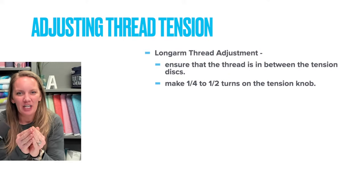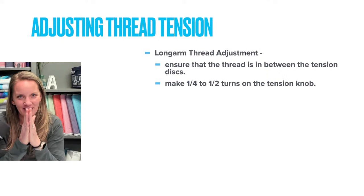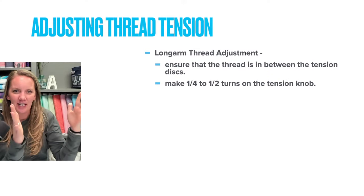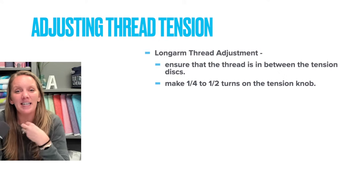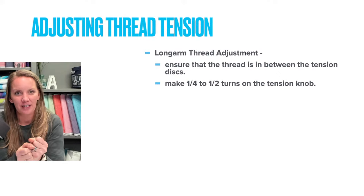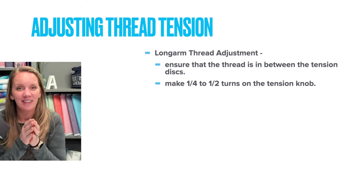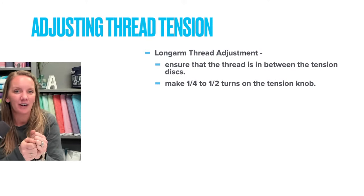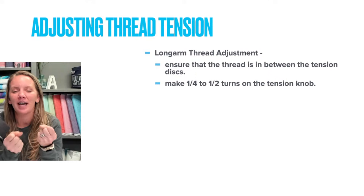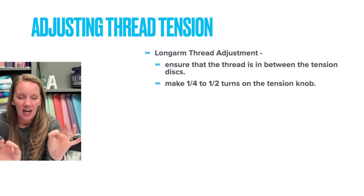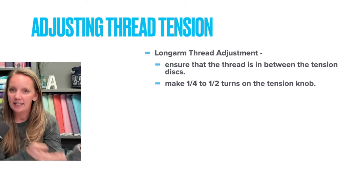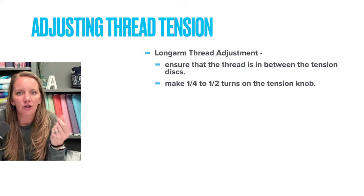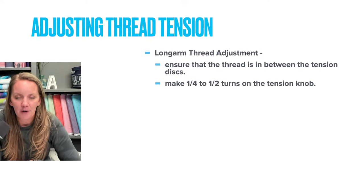For long armers specifically: when threading your machine, most long arms have two tension discs that hold that thread. On a sewing machine, raising or lowering the foot opens those tension discs, but on a long arm that doesn't happen — so I need to make sure the thread is pulled in between those tension discs. If I make adjustments on them and the thread isn't in there, I now have a different problem. Sometimes we keep making adjustments, don't see a difference, and tighten those discs so tight that we can't get the thread in between at all. Even if you think you threaded it correctly, check again — with slicker thread it can work itself out sometimes.